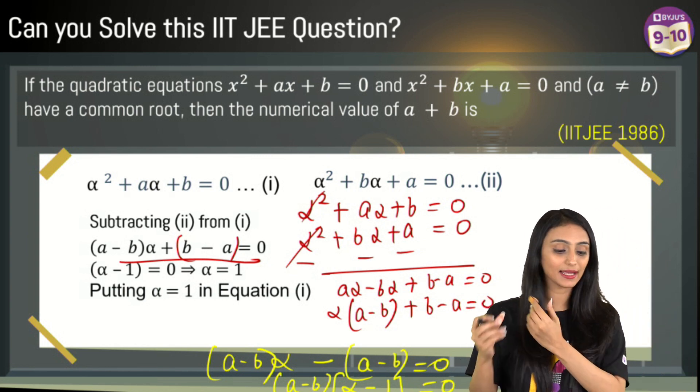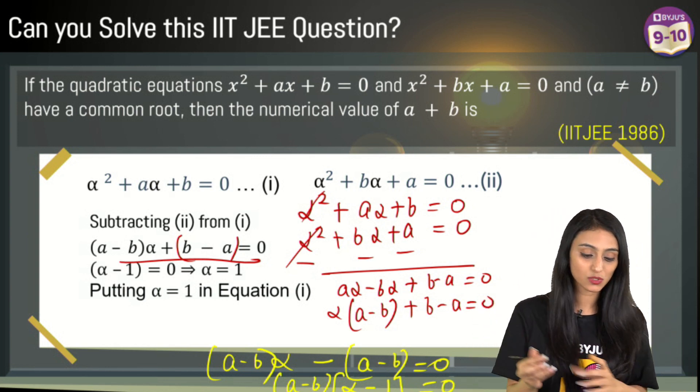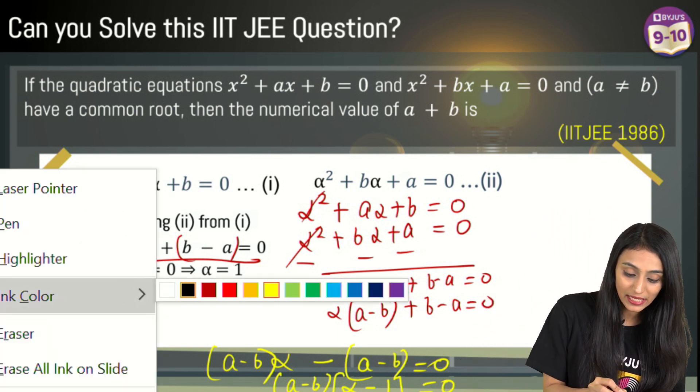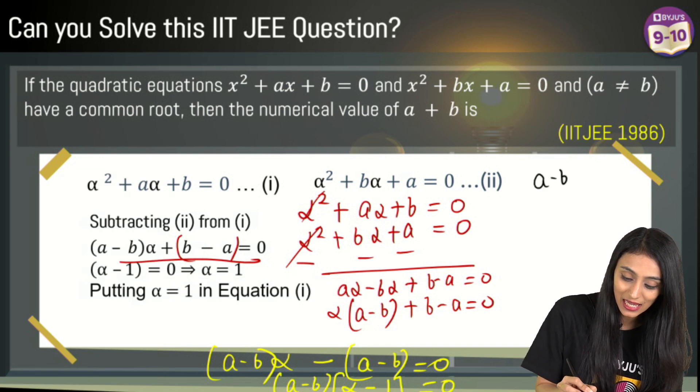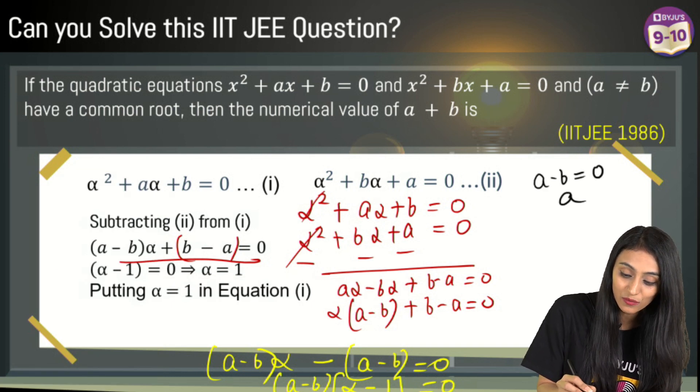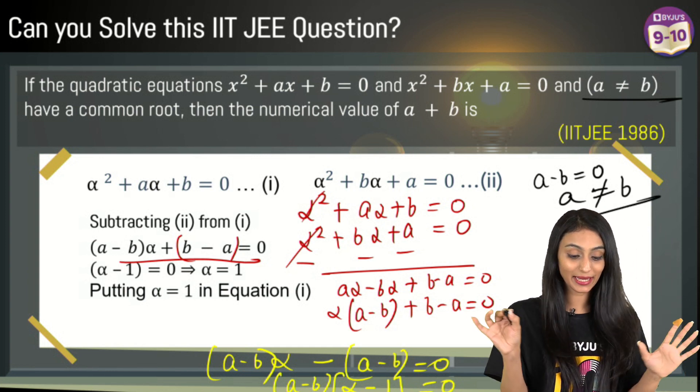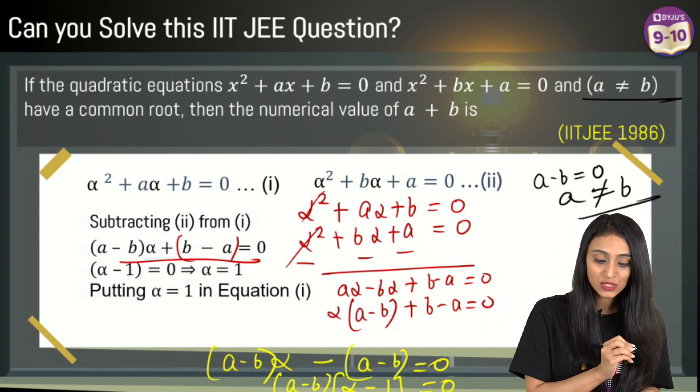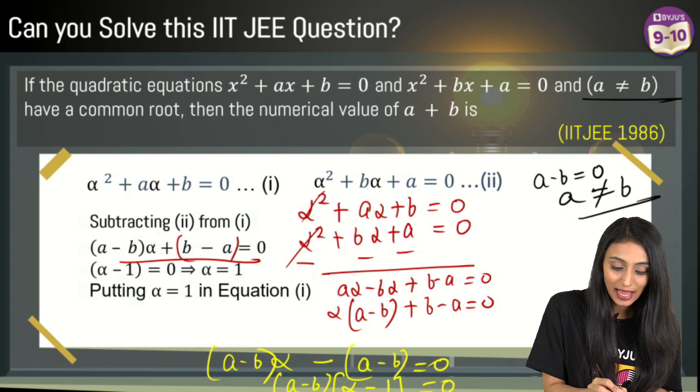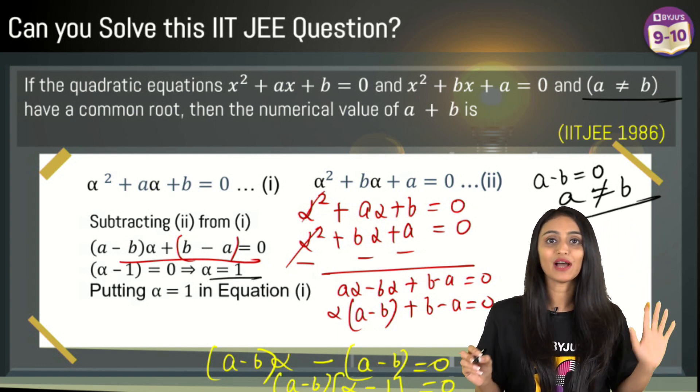So one by one, if I equate each of them to 0, so if I say that a - b is equal to 0, we are given that a is not equal to b, right? Now we are left with α - 1 = 0. That means α equals to 1, we have got the value of α.